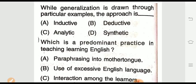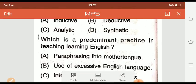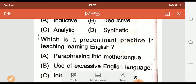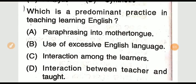Question eight: When generalization is drawn through particular examples, the approach is called dash. Options are: inductive, deductive, analytic, synthetic. The right answer is option A — inductive. When particular examples lead to a generalization, the method is inductive.